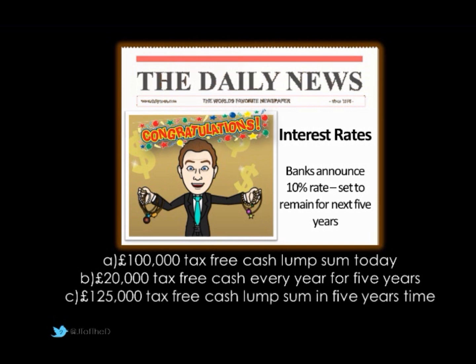Option C is to have a slightly larger sum of money — £125,000 tax-free as one lump sum in five years' time, so nothing until year five. So which option would you take? Well, the canny amongst you may have spotted that bank interest rates are set at 10% on our newspaper headlines.